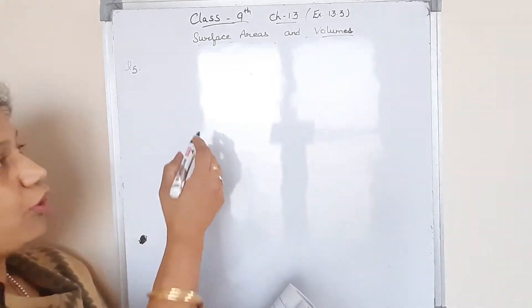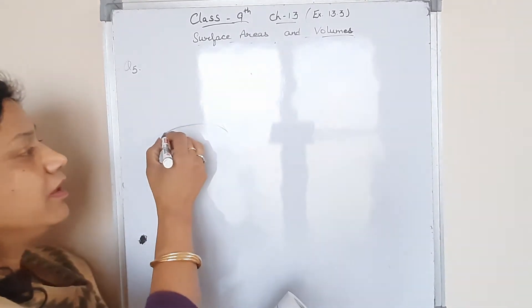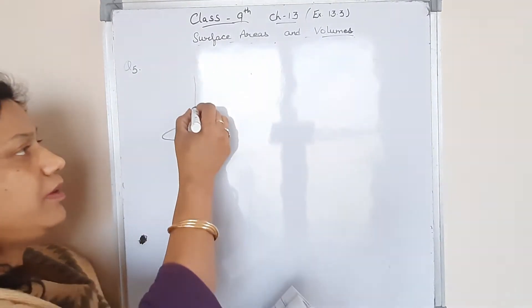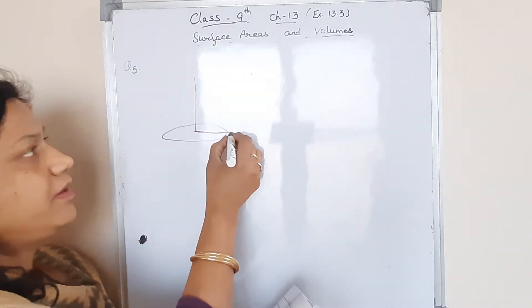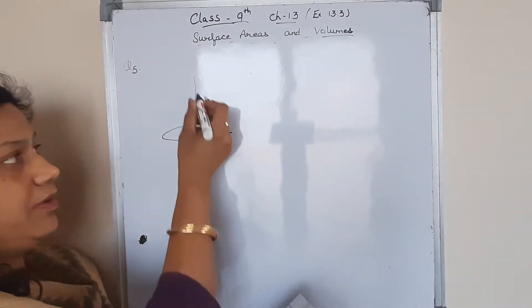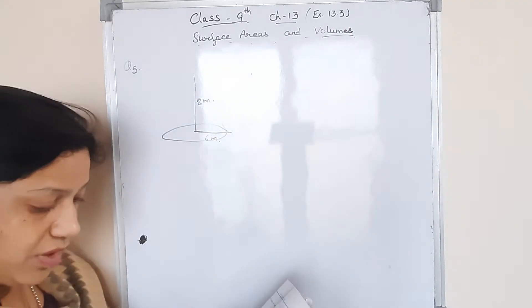He is saying we want to make a tent in the conical shape with the height 8 meter. This is the height 8 meter and the base radius 6 meter. This width and height we are having.